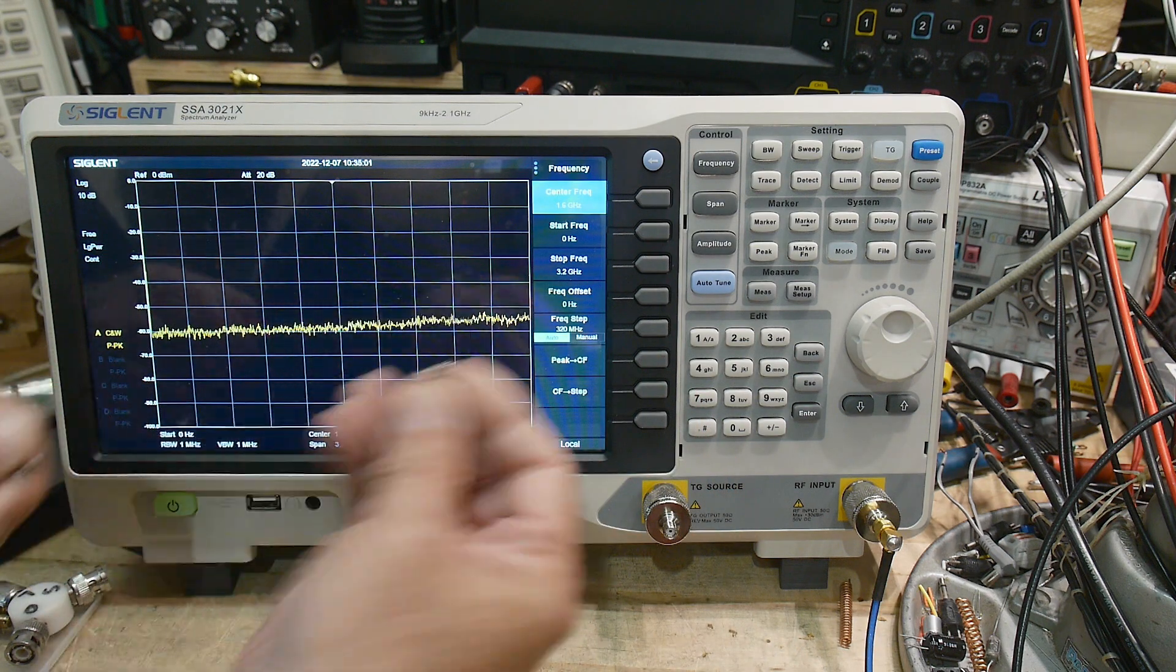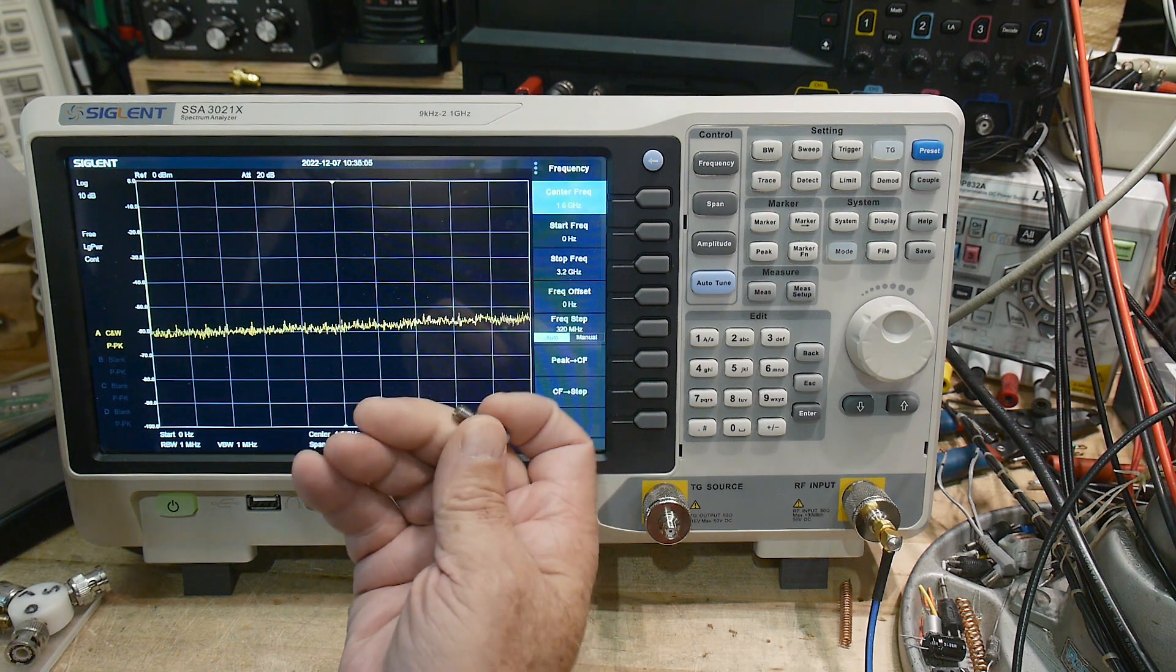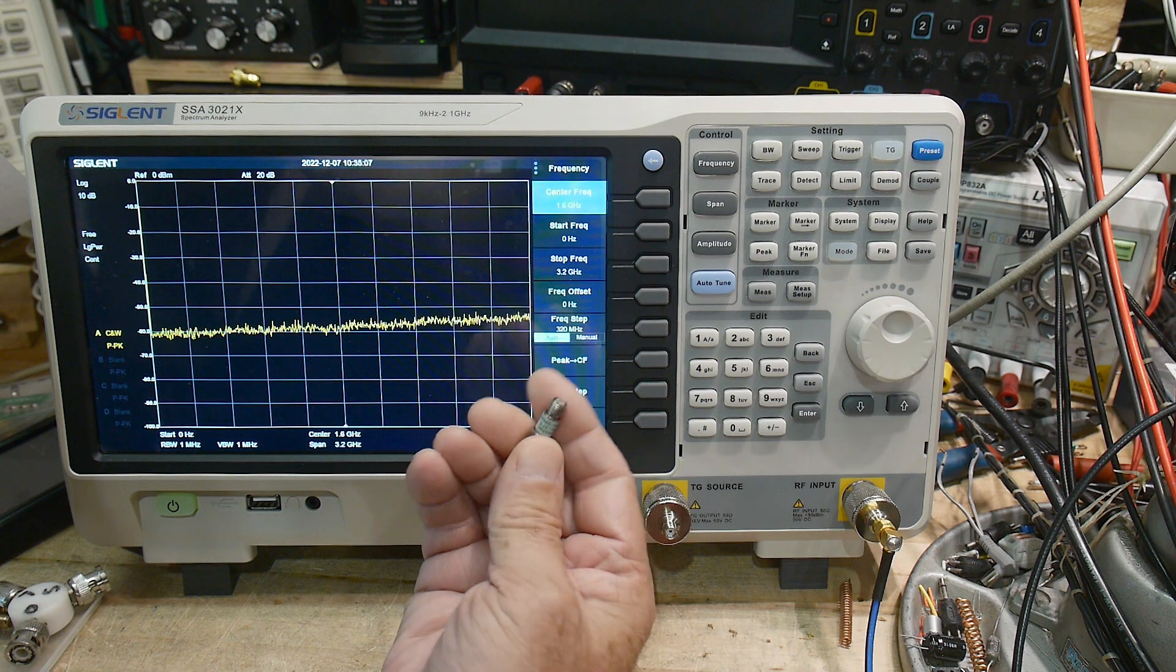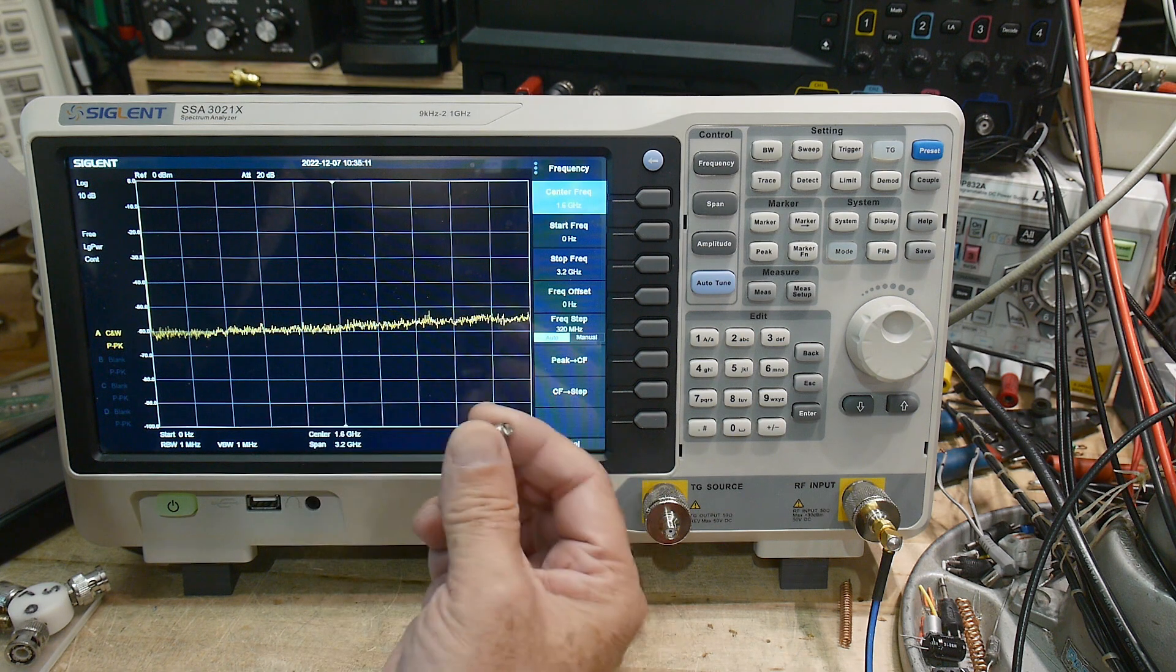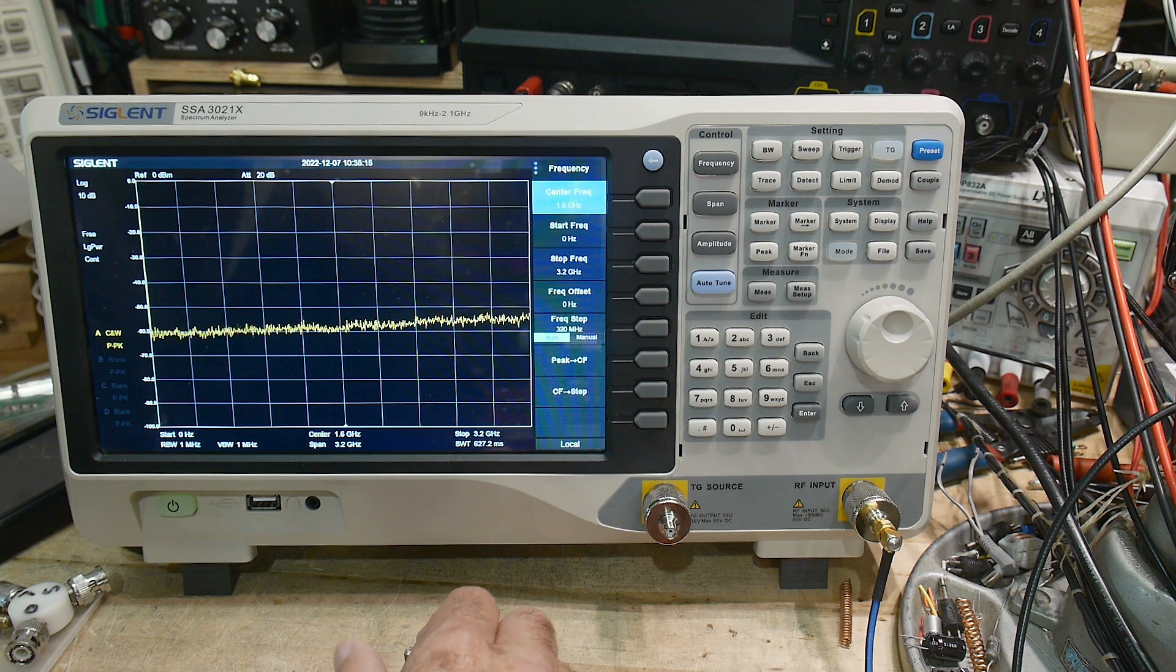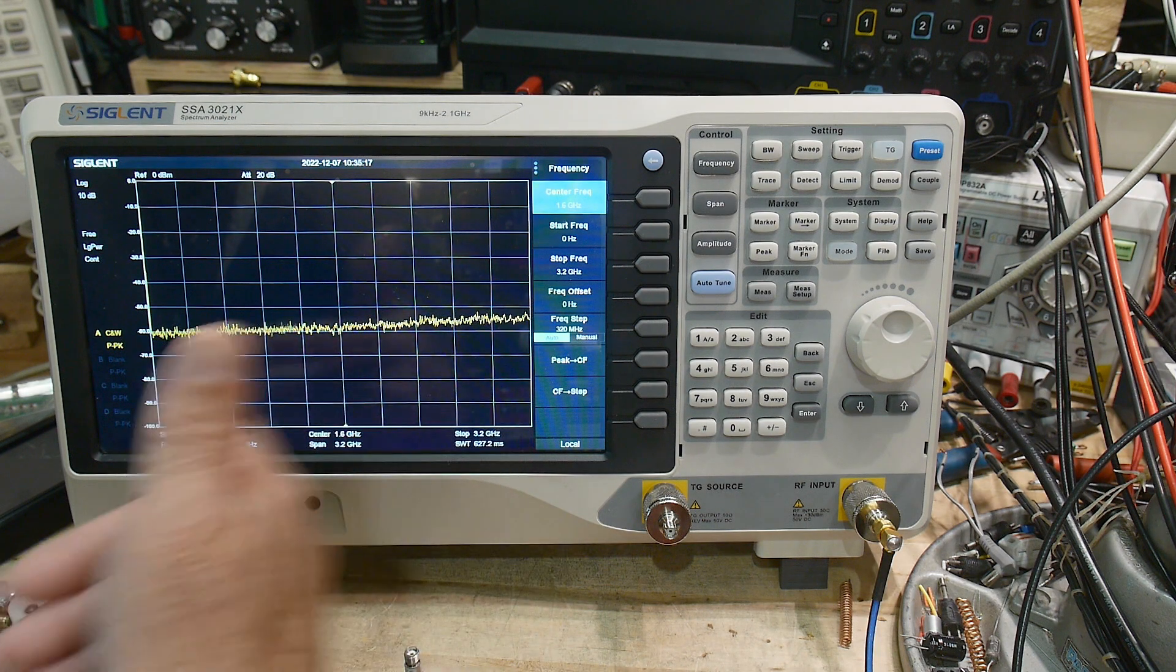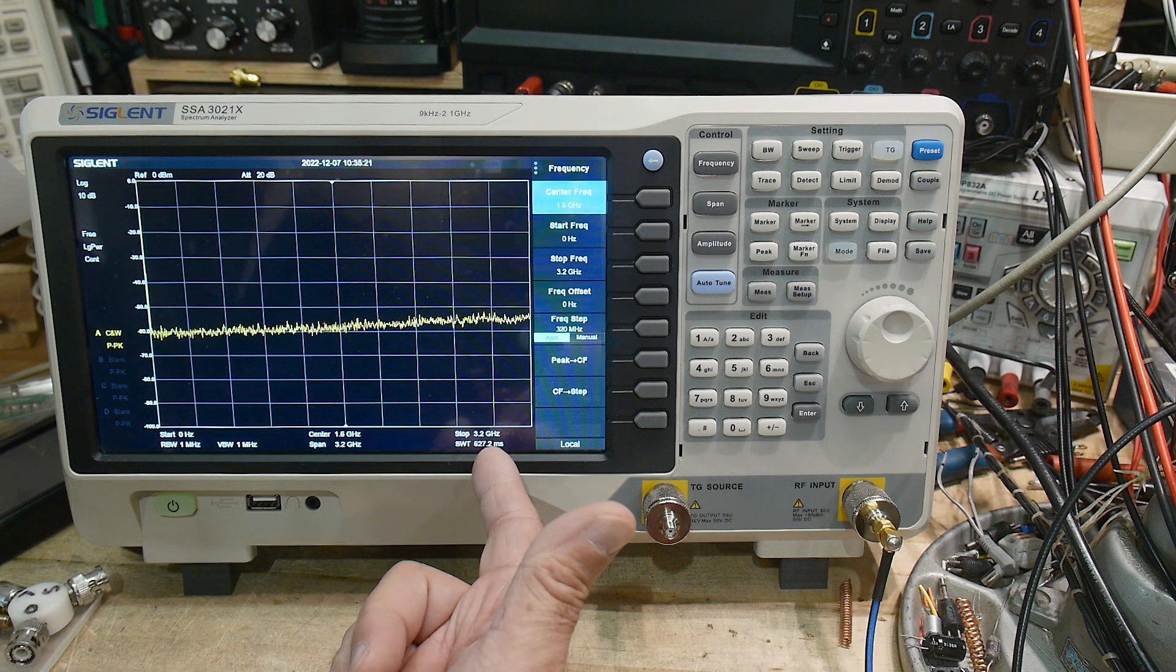I'll get one here. This is a 6 dB attenuator, and it says 6 dB attenuation, but at what wavelengths? You want to see if it's equal 6 dB across all wavelengths, and that's what a machine like this can measure. You need to set the span that you want, and we'll just leave it open. It's going from 0 to 3.2 gigahertz.